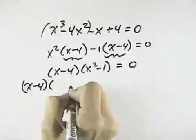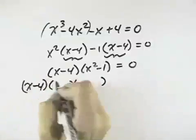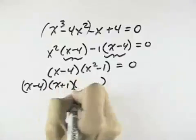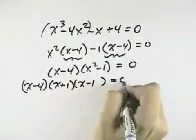So I have my factor of x minus 4. But x squared minus 1 can be broken down into the sum and difference of the square roots, which would be x plus 1 times x minus 1, since it's a difference of squares.